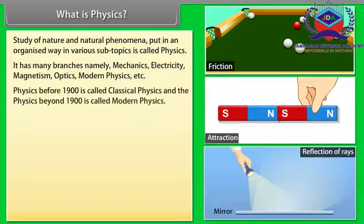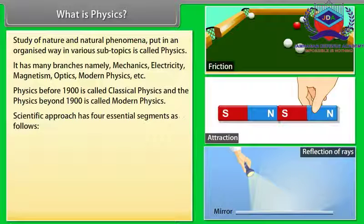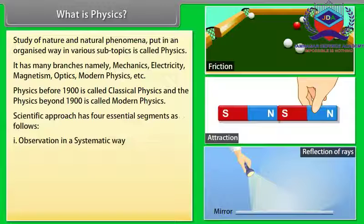Physics before 1900 is called classical physics and physics beyond 1900 is called modern physics. Scientific approach has four essential segments as follows: Number 1, observation in a systematic way. Number 2, hypothesizing.